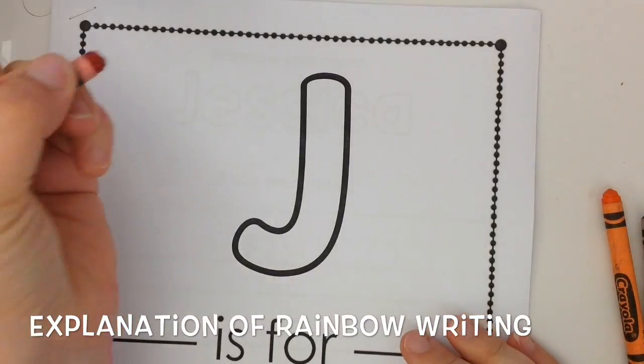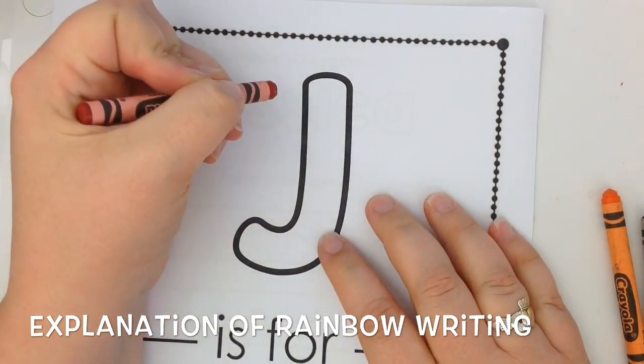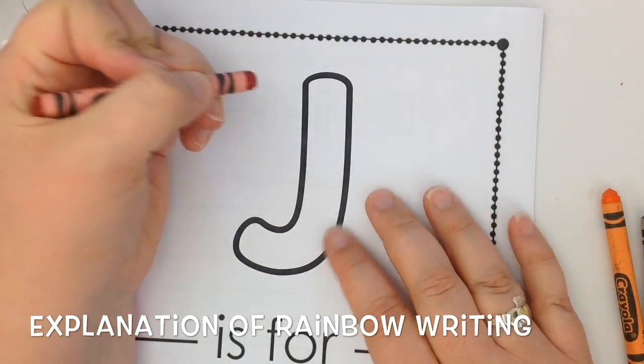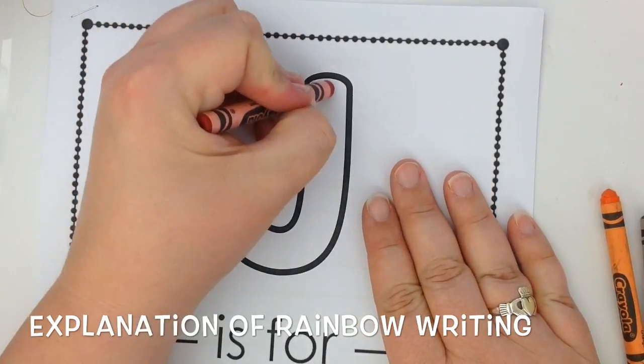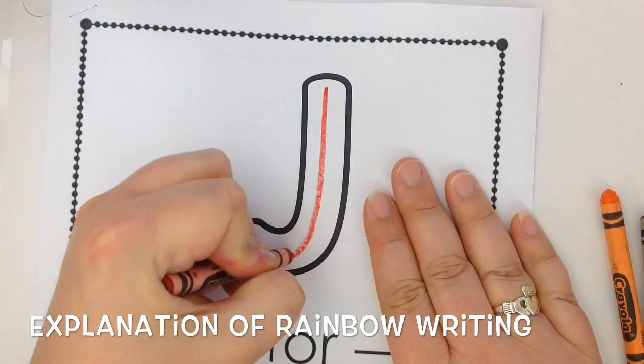The first color we start with is red, and we're simply going to write as if we were writing with a pencil. We're just going to use crayons. So I'm going to write my J in red.